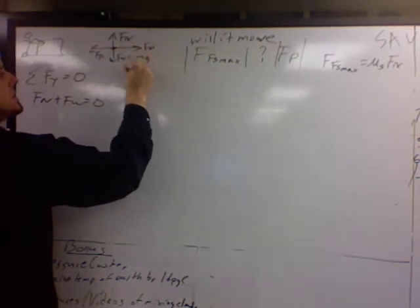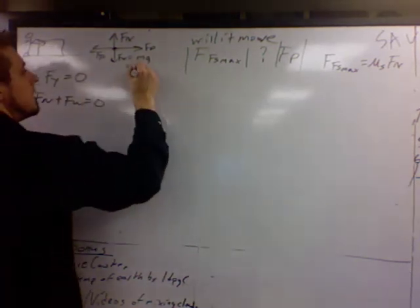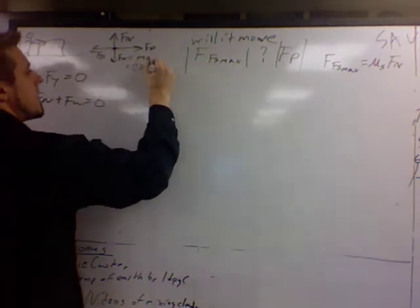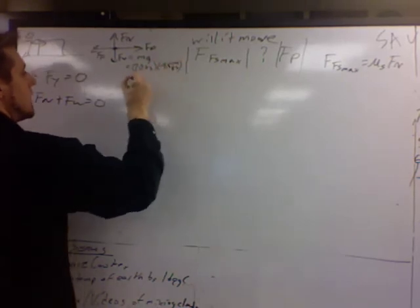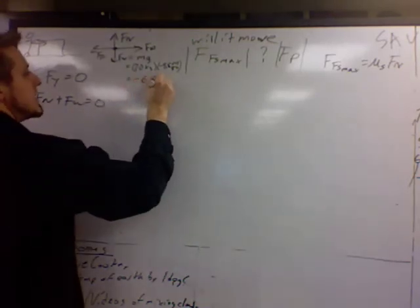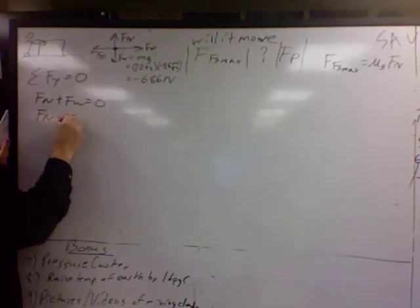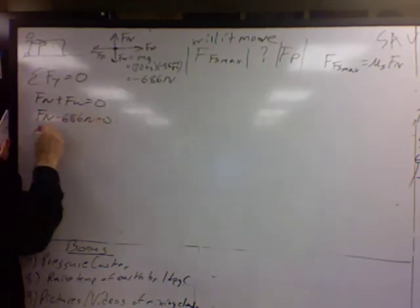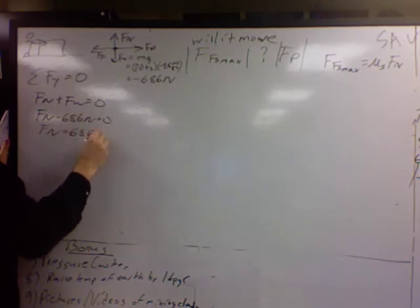The weight is m times g, or in this case, 70 times negative 9.5. The weight is negative 686 newtons. So now I have what the normal force is. Normal force is 686 newtons.